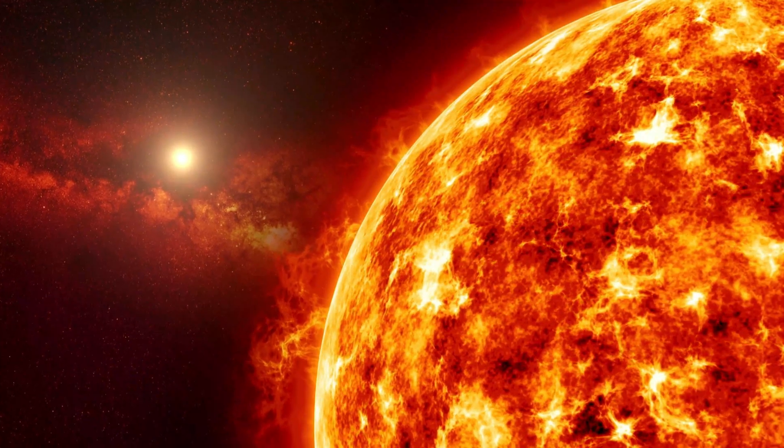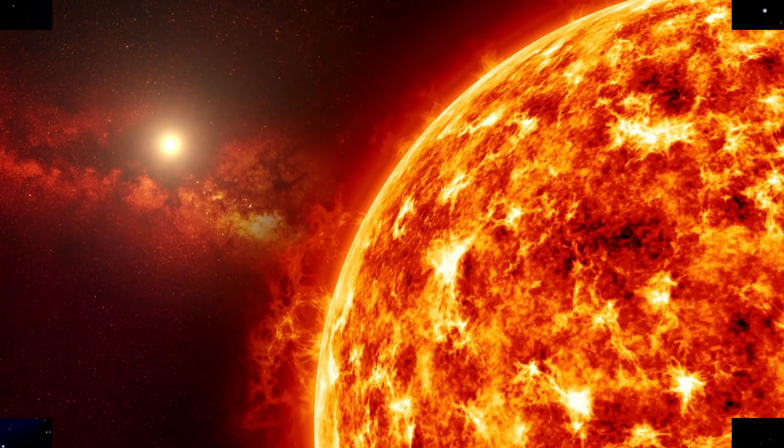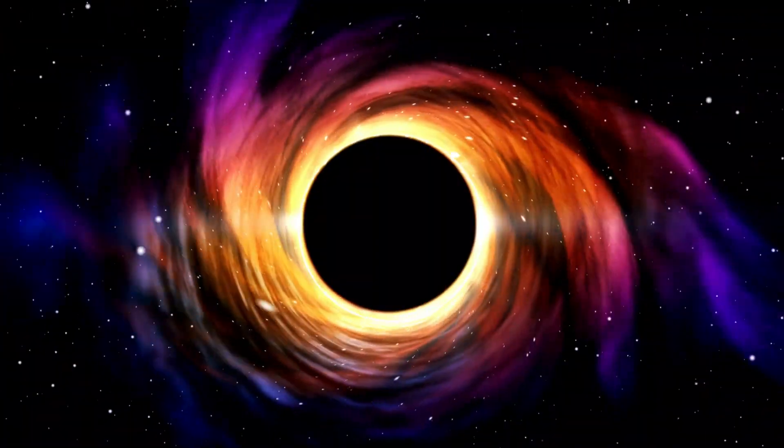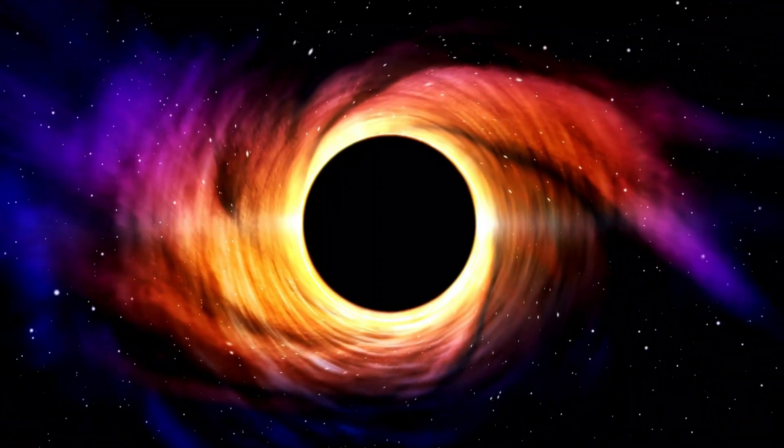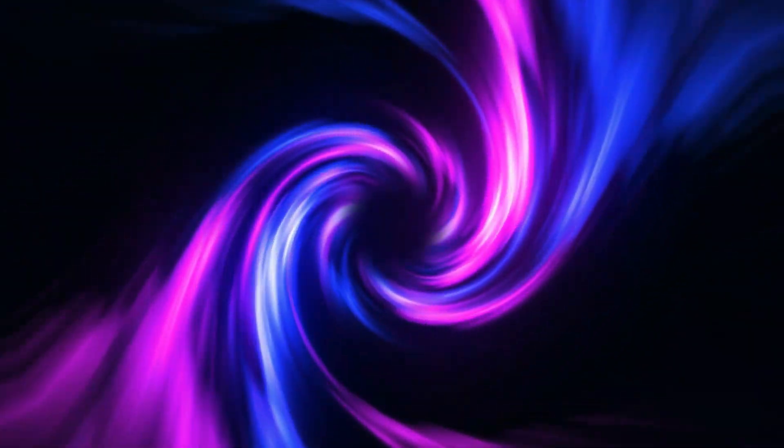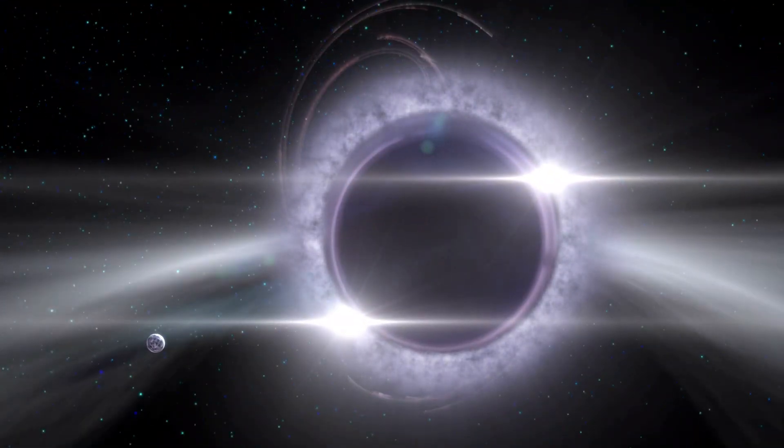When stars significantly more massive than our sun reach the end of their lives, they collapse, generating black holes in space. They pack a tremendous quantity of matter into a relatively small space. They have such a high density that the gravity they produce prevents even light from escaping from within them.